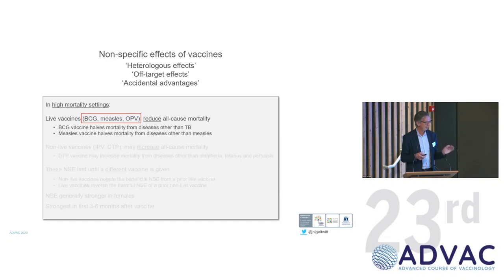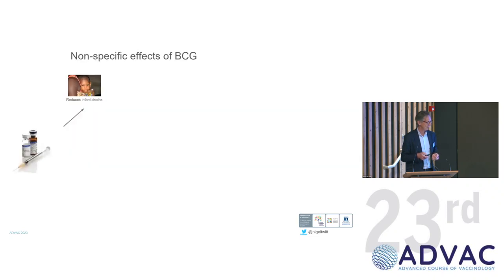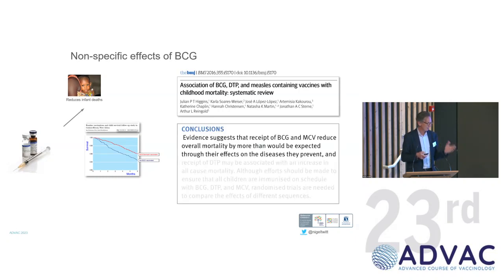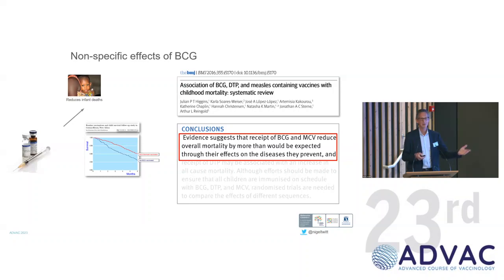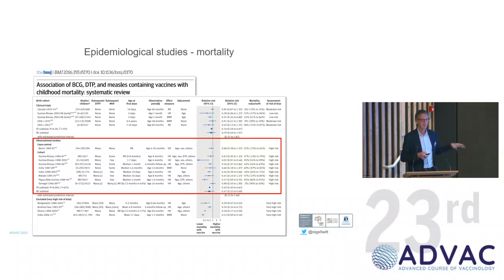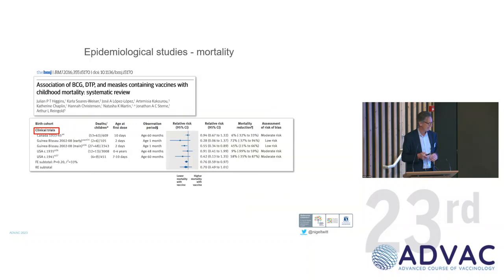So the hypothesis or some of the principles that have been proposed are that particularly in high mortality countries, where you can see these effects better, live vaccines in particular — so BCG, measles-containing vaccines and oral polio vaccines — reduce all-cause mortality, more than just the effects on their target disease. You need to know about this paper published by Higgins, a systematic review commissioned by the World Health Organisation, published in 2016. The conclusion was that evidence suggests that the receipt of BCG and measles-containing vaccines reduces overall mortality by more than would be expected through their effects on the diseases they prevent.